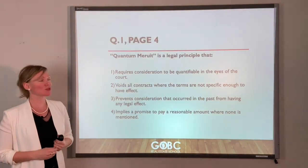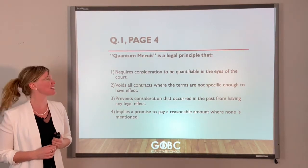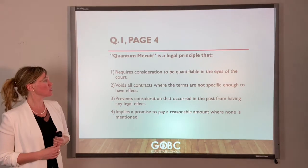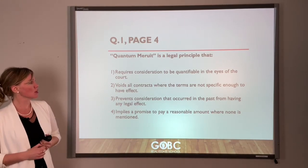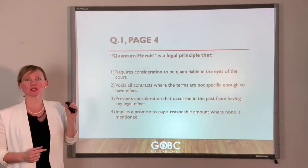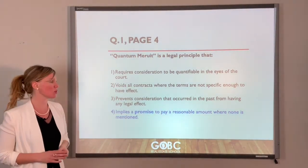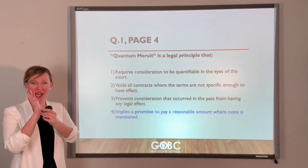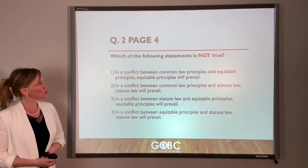Question one: quantum meruit is a legal principle that... look at the options. The keyword they're looking for is always the promise. Quantum meruit is a promise from the courts to pay a reasonable amount - nobody tells you exactly how much, but the courts decide. That's why it's better in contracts to specify how much they'll pay you, so you don't have to go through quantum meruit. Question two asks which statement is not true.